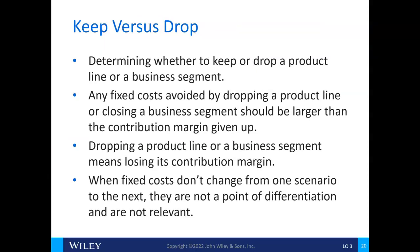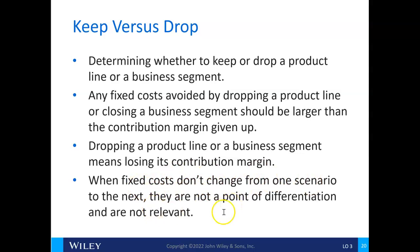Next is keep versus drop a product — determining whether to keep or drop a product line or business segment. Maybe a segment appears to be losing money and you want to eliminate it. Any avoidable fixed costs would need to be larger than the contribution margin being given up. When you drop a product line, you lose that contribution margin. Fixed costs that don't change between scenarios are not relevant, but if they do change, they are relevant.